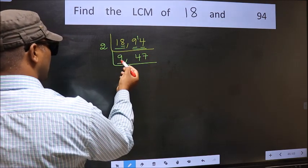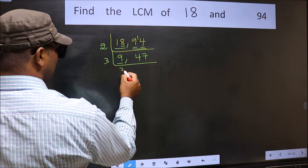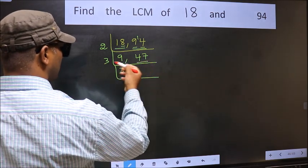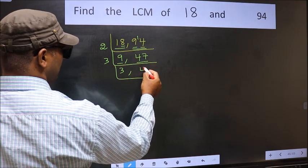Now here we have 9, 9 is 3 threes, 9. The other number 47 not divisible by 3 so we write it down as it is.